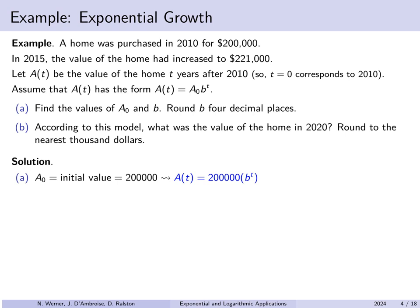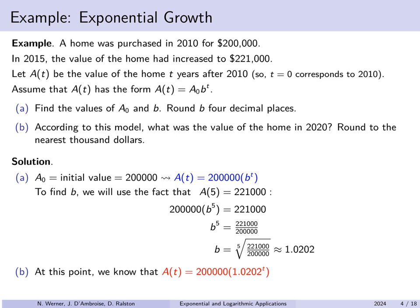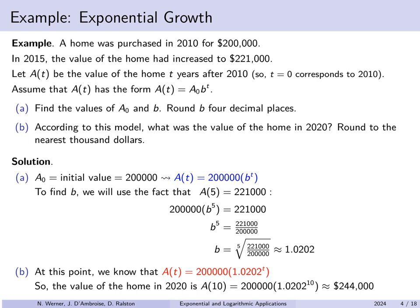We know a(t) = 200,000 · bᵗ. To find b, we use the fact that a(5) = 221,000, since five years later in 2015 the home was worth $221,000. So 200,000 · b⁵ = 221,000. Dividing both sides by 200,000, taking a fifth root, and rounding to four decimal places gives b ≈ 1.0202. For the value in 2020 — ten years after 2010 — we set t = 10 and compute approximately $244,000.